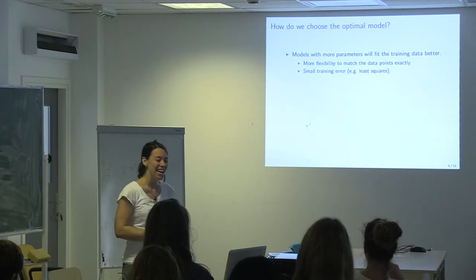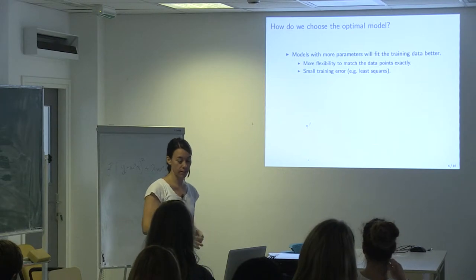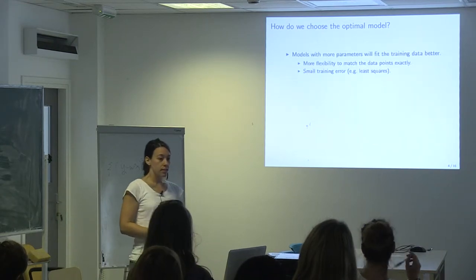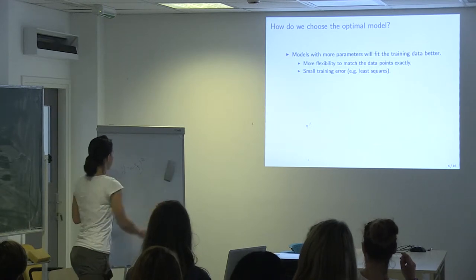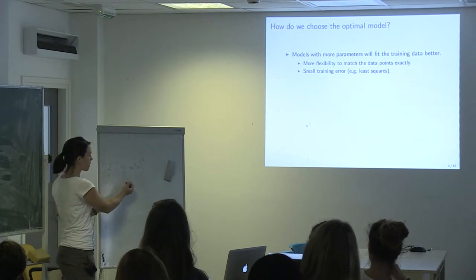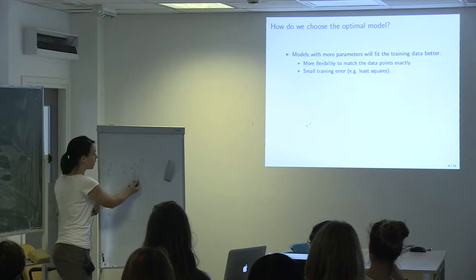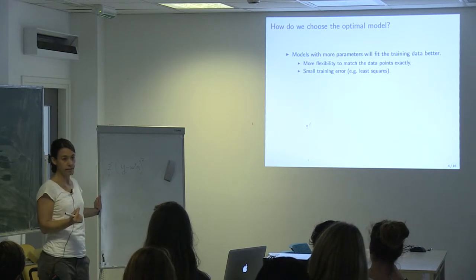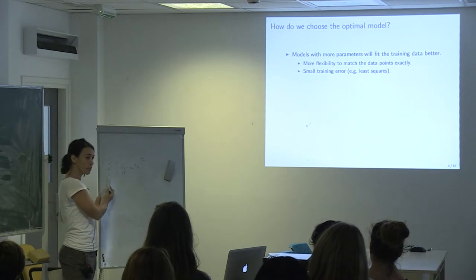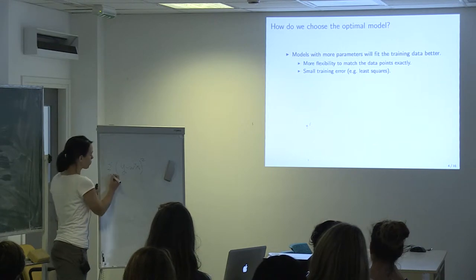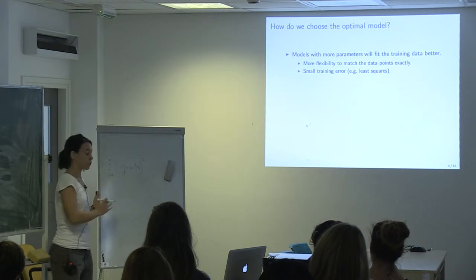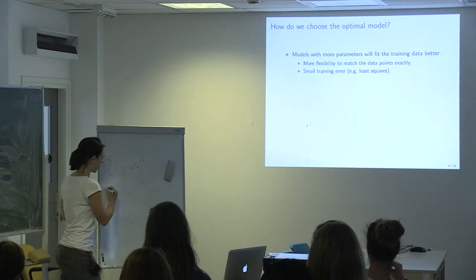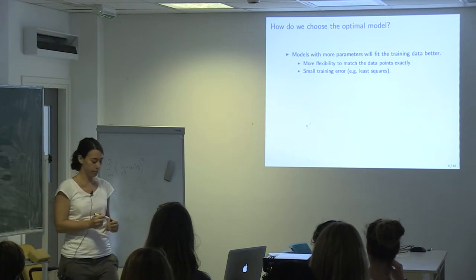When we have models with many parameters, we can fit the training data exactly — passing through every single data point. What this does is minimize the error term between the true output and our model, but this happens only for our training data. The sum runs from i equals 1 to n, and the errors for those n data points are minimized. But when we get data point n plus 1, we might have a problem.